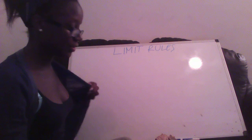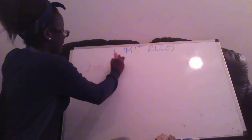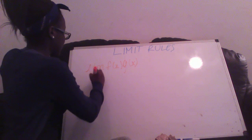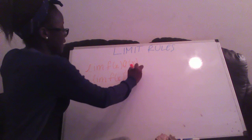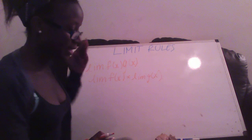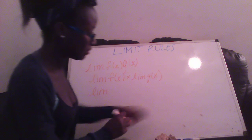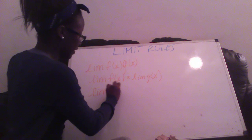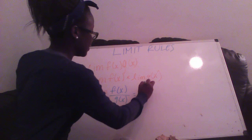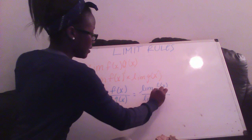Your next rule is the product rule. For the product rule, it's the limit of f(x) times g(x), and you can break that down to the limit of f(x) times the limit of g(x). It's going to be similar for the next rule, which is the quotient rule. You have the limit of f(x) over g(x), and you just break that down to the limit of f(x) over the limit of g(x).